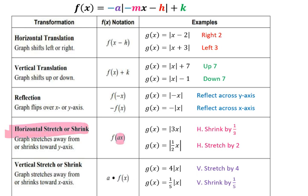When we're doing a vertical stretch or shrink, that means our graph is going to stretch away or shrink towards our x-axis, and our scale factor is in the front of the function and will be distributed. When our scale factor is a 4, it's written as a 4, and when it's written as a one-fifth, it's a one-fifth. So our vertical stretches and shrinks are going to stay true to what we're told for our scale factors.